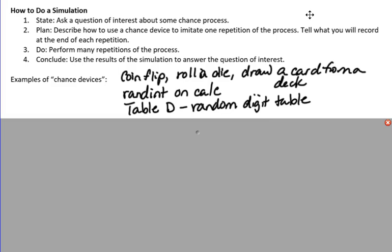The second step is to describe how to use a chance device to imitate one repetition of the process. Types of chance devices are flipping a coin, rolling a dice, drawing a card from a deck, using random int on the calculator, or using the random digit table, table D, in the back of our book. Any of those things could be used to simulate a random occurrence.